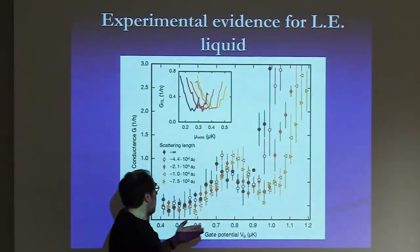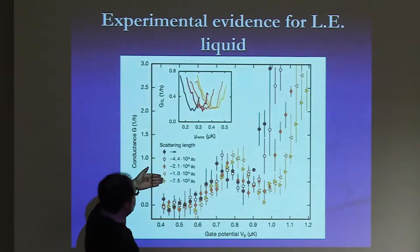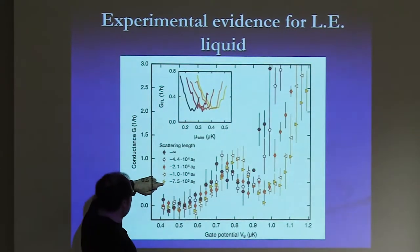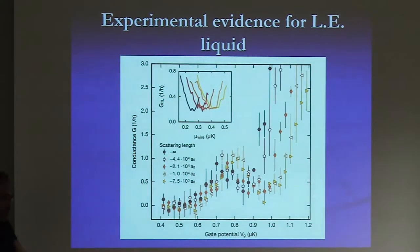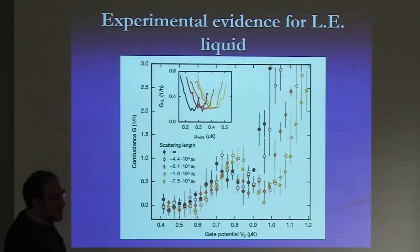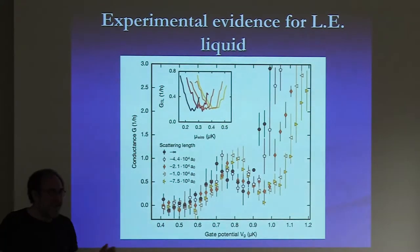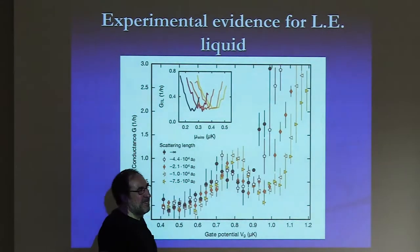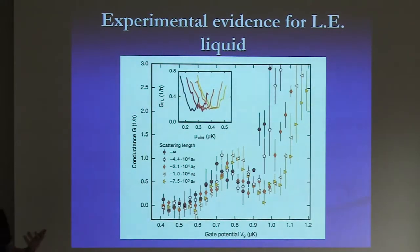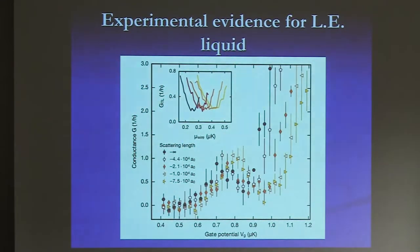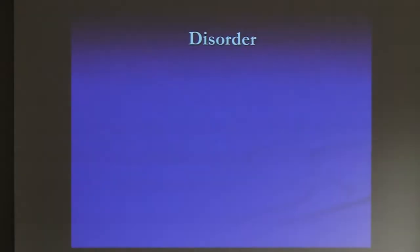Here is the curve of their conductance: they go from no interactions and very small attraction all the way to infinite attraction, and nothing changes — they see the same curve. This is the first experimental proof of the existence of the Luther-Emery liquid, which you cannot simply test in condensed matter because there is no system with an attractive contact interaction. So cold atoms provide something truly unique here.